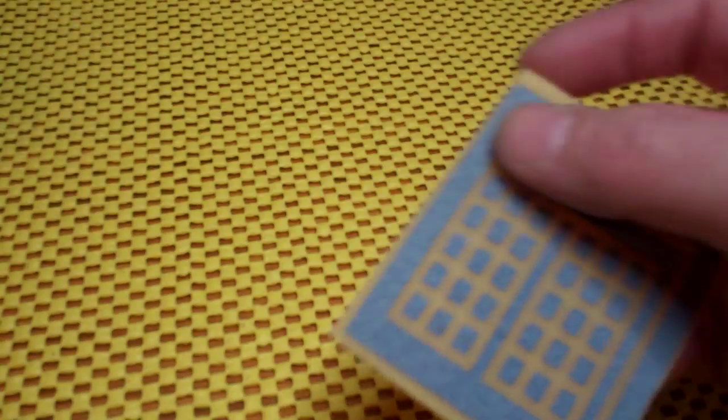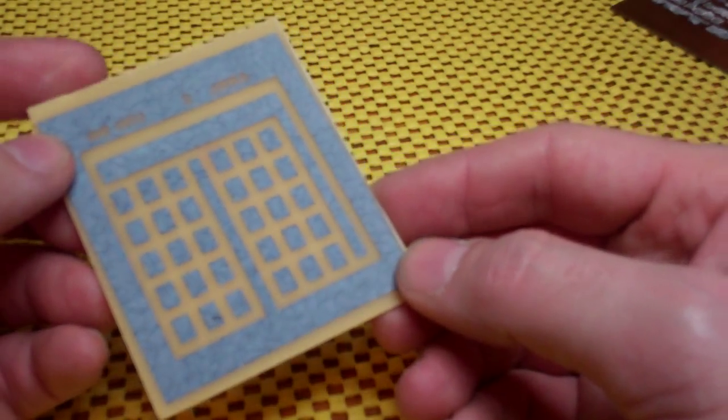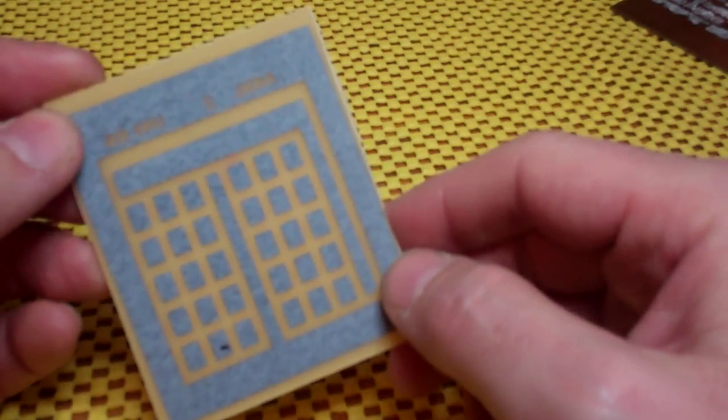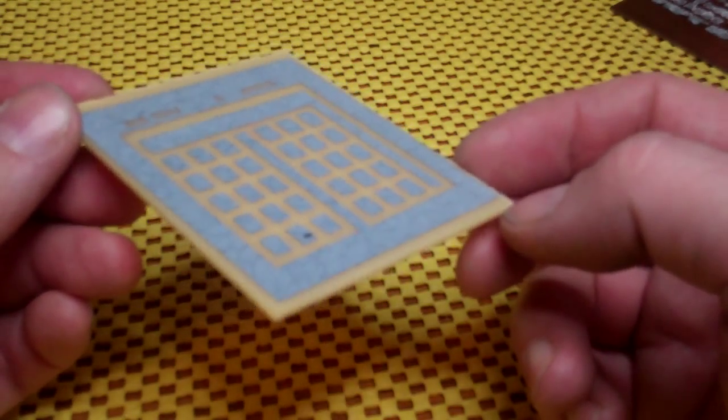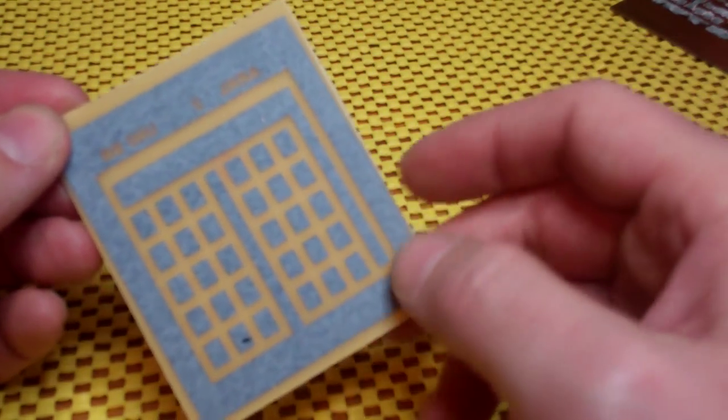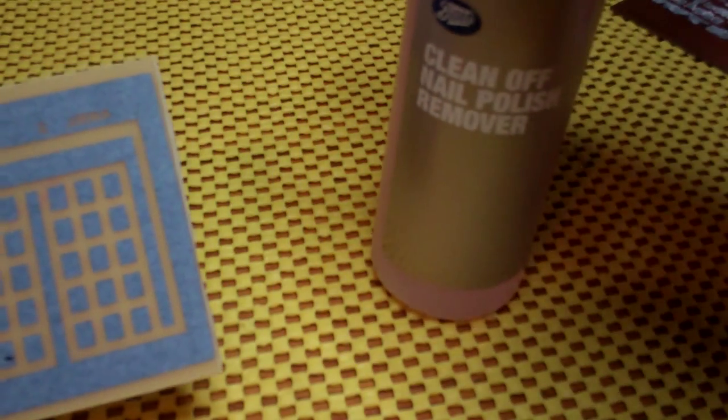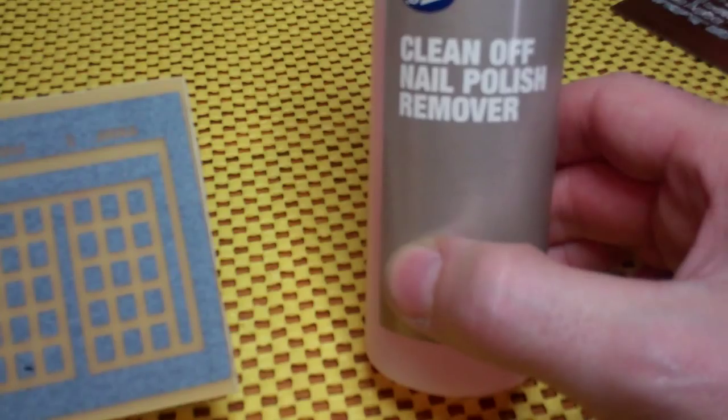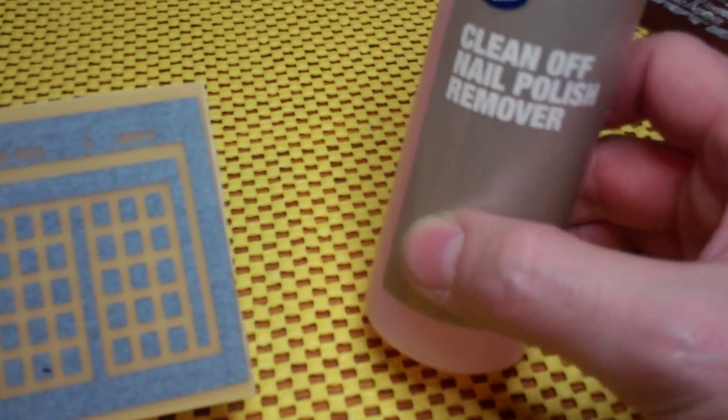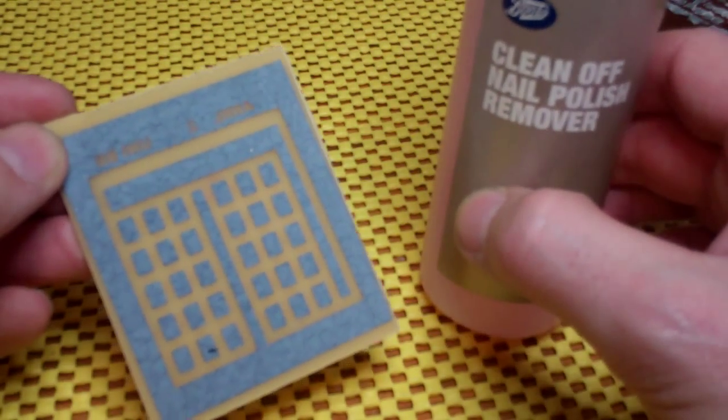One of the things with laserjet printers is the ink is not resistant to acetone. So if you have acetone, it should polish off relatively quickly. In fact, acetone is one of the main ingredients of nail polish remover. So here we go. I've raided the cupboard and I'm going to borrow this.